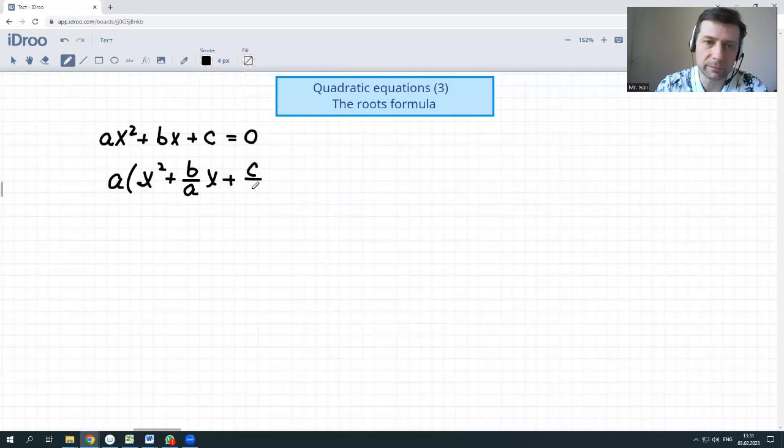plus c over a. This stuff should be equal to zero. Then we remember that a is a coefficient, obviously not equal to zero. Then the expression in the parenthesis should be equal to zero. Let's go: x squared plus b over a times x plus c over a should be equal to zero.